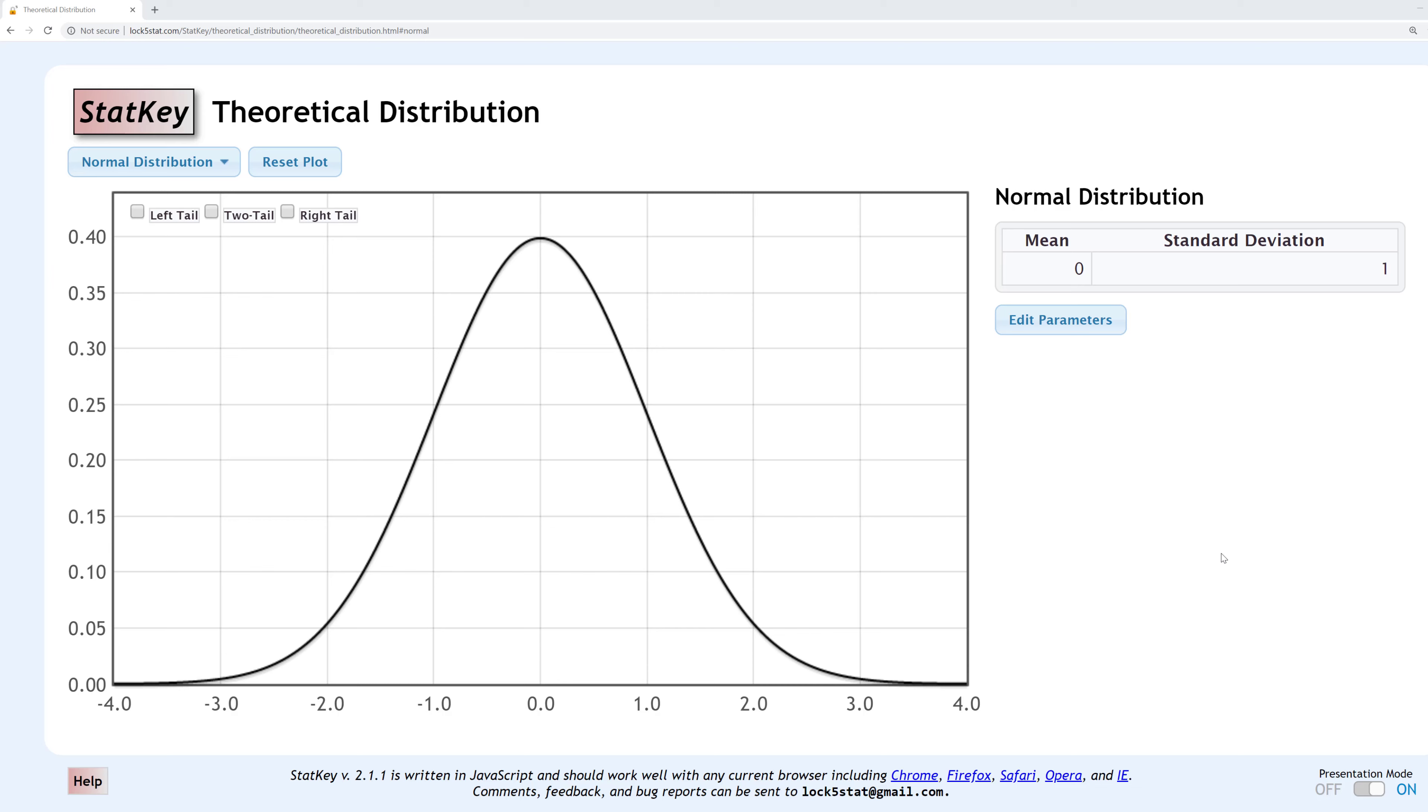Interactive distributions, such as the Z distribution here in StatKey that we're going to be looking at, are becoming more popular and are slowly replacing the Z tables found in many traditional statistics textbooks.